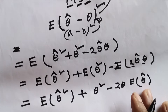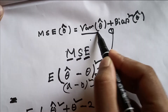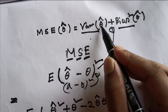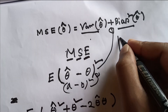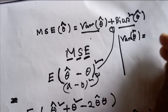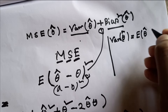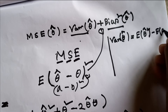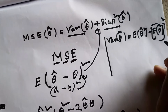Now we have to look at this expression: we can see a variance and a bias. So we need to recover some formulas. The variance of theta-hat is defined as: the expected value of theta-hat squared minus the expected value of theta-hat, whole squared.